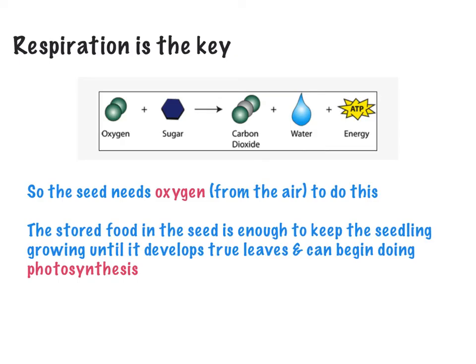This is another misconception people have. As soon as we talk about plants, we talk about photosynthesis and we don't talk about respiration. But believe it or not, respiration occurs in all living things. Plants are living things, so respiration occurs there — they need to be able to convert the food they have stored into energy they need to grow and repair. This means that seeds need oxygen. So now we've got water, temperature, and oxygen.